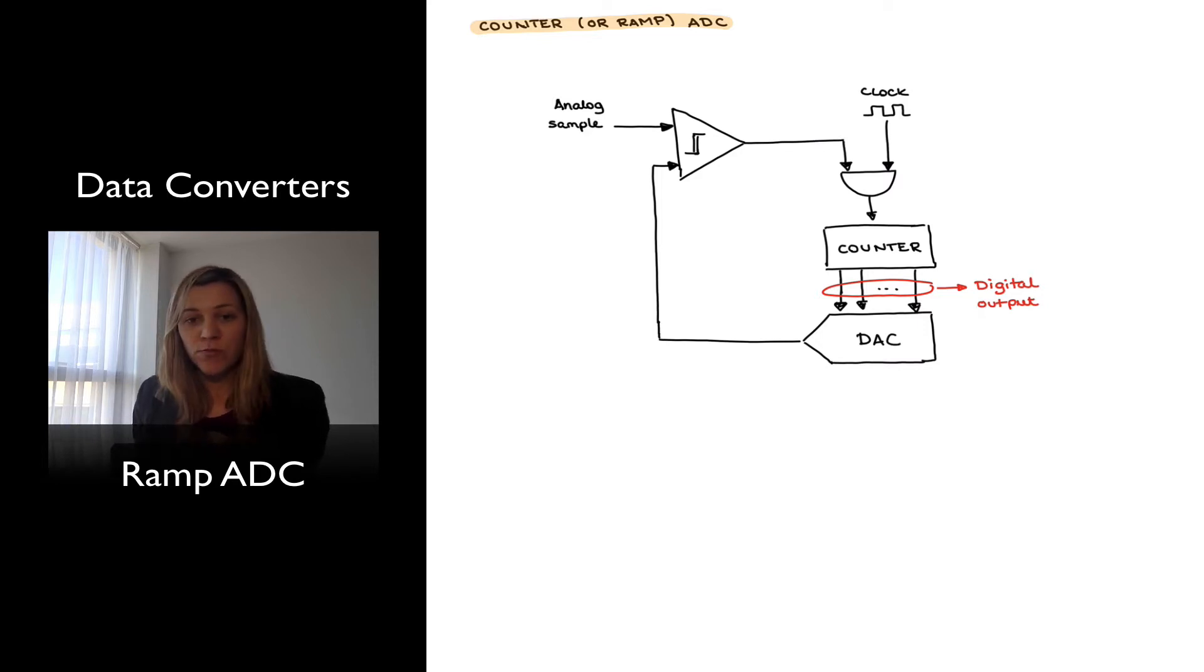The way this works is as follows. An analog sample is initially provided at the beginning of a counting cycle. Maybe it's coming from a sample and hold circuit, and so it's provided to the input of the comparator. The counter gets reset to zero.